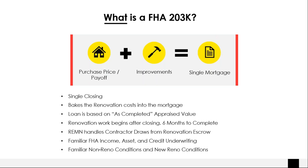The cool thing about the 203K is that unlike your typical loan where the loan amount is based off your as-is value, we're basing the 203K off the as-completed appraised value, meaning subject to all the work being done. So we can finance in a lot more when we talk about as-completed value. With the 203K, the renovation work begins after closing. The contractor has six months to complete that work. And it should be good news that Remen handles all the post-closing contractor draws from the setup renovation escrow account, so you don't have to get involved in the actual renovation work.